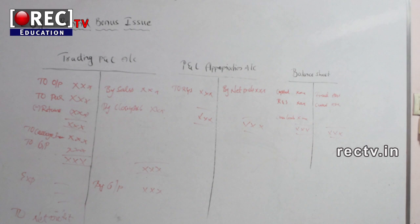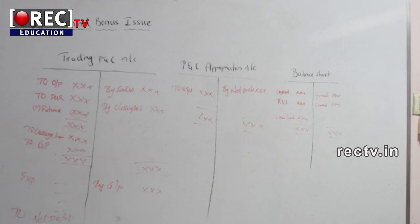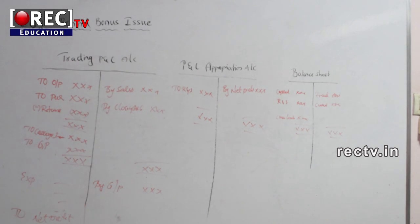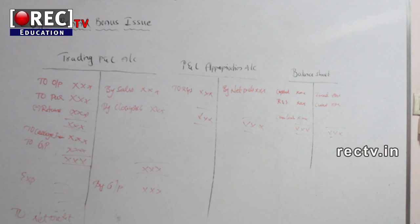After deducting the tax paid by the company, we get the net profit, which is taken to the profit and loss appropriation account, as you are seeing in this video. Now, if the net profit is, for example, 50,000, and the whole 50,000 is given to the equity shareholders as dividends, the company has to pay dividend distribution tax on that 50,000. So previously they paid income tax, and now they are again paying tax in the form of dividend distribution tax — on the same amount, twice. This is double taxation. To avoid double taxation, the concept of bonus issue came into existence.